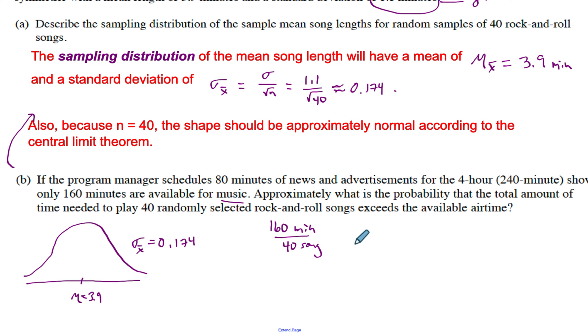If we take 160 minutes and 40 songs, that means the average song length should be 4 minutes. So it should be 4 minutes per song. If the average is greater than 4, then I know the total will be more than 160 minutes. If the average is equal to 4, it will equal 160. And if the average is less than 4, it'll be less than 160.